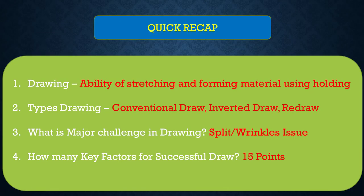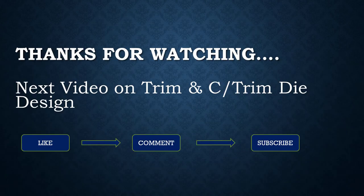Quick recap: Drawing is the ability of stretching and forming material using holding pressure. Types of drawing are conventional toggle draw, inverted toggle draw, and redraw. The major challenge in drawing is achieving a split and wrinkle-free panel. There are 15 key factors for a successful draw. That's it for today — thanks for watching. If you like this video, please click the like button, comment, and subscribe. Thank you.